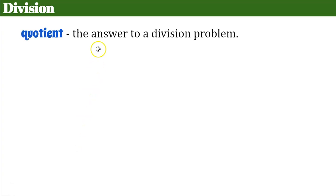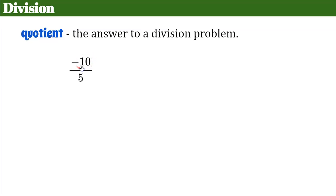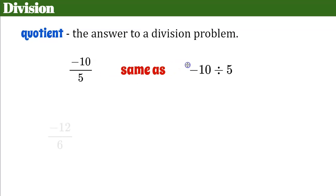Let's talk about division. A quotient is the answer to a division problem, so anytime you're asked to divide, your answer is called the quotient. Here's an example of a division problem. You're probably thinking it looks like a fraction — well, a fraction bar is the same as a division problem. It's asking you negative 10 divided by 5. This fraction bar is the same as seeing a division symbol; it would be the same as writing negative 10 divided by 5.